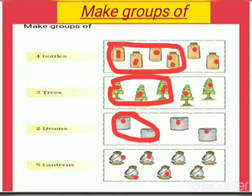In the last group there are one, two, three, four, five, six, seven lanterns. Let us make a group of five lanterns: one, two, three, four, five. Make a group.